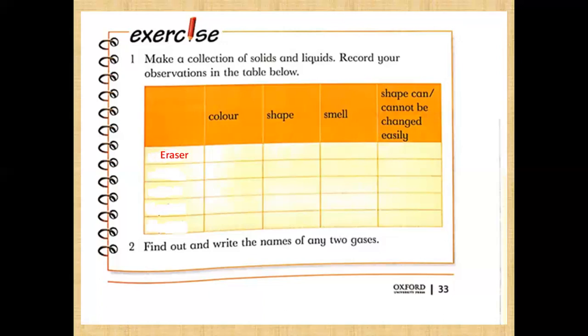What is this — is it solid, liquid, or gas? Keep in mind: solids have definite shape and definite volume. Liquids have definite volume but not a definite shape. Gases are the third state of matter — gases don't have definite shape and also don't have definite volume.